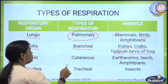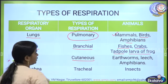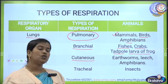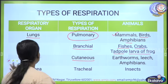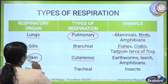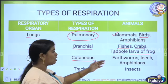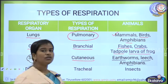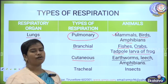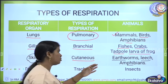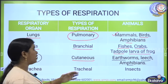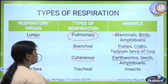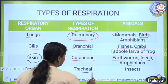The third type is cutaneous respiration. Cutaneous respiration means the animal uses skin as the respiratory organ. Earthworms, leeches, and amphibians use their skin for respiration. Those animals undergo cutaneous respiration.